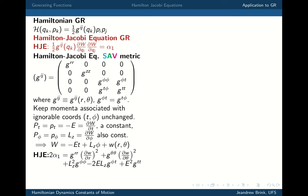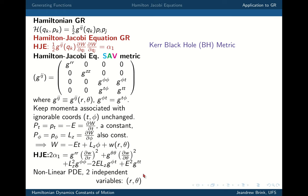If you can solve that equation for the general SAV metric, you've solved the Hamilton-Jacobi equation and can say something about the transformation to coordinates constant along your orbits. To date, I think there are four SAV spacetimes for which this has been solved — the first was done by Carter. Kerr is one of them, and I'm going to do that now. Let's specialise and do it for Kerr.